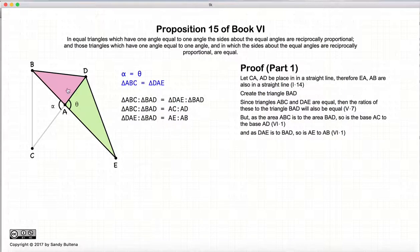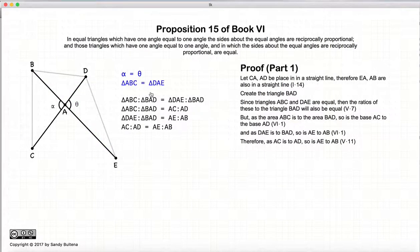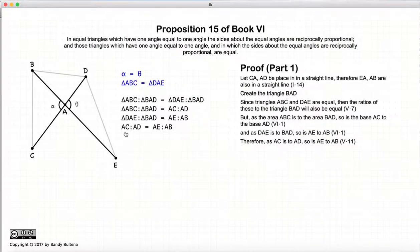Similarly, we can show that the ratio of the area of BAD to DAE is equal to the ratio of BA to AE. Now this ratio is equal to that ratio — in other words these two are equal to each other — which means that these two ratios are equal to each other by Proposition 11 of Book 5. So in other words, AC to AD is equal to AE to AB. This is reciprocal proportion.